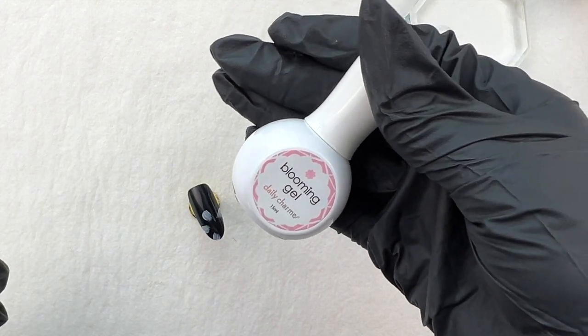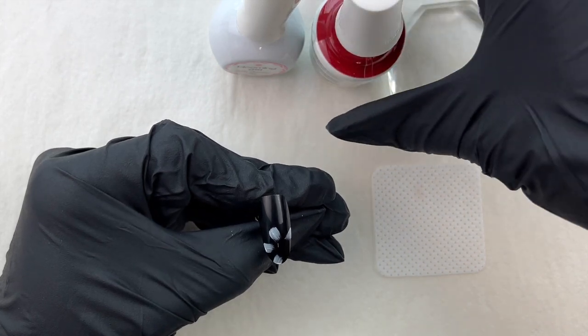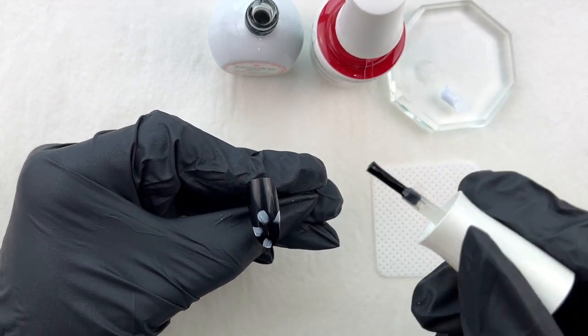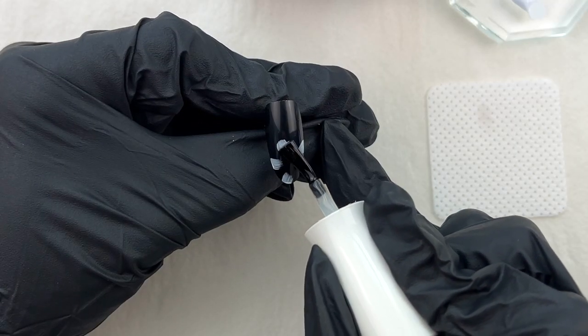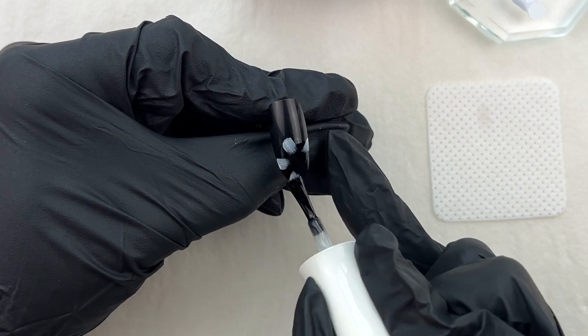I'm going to be using blooming gel and color gel polish. Apply the blooming gel like a circle only on the petals I created. Then do not cure it.